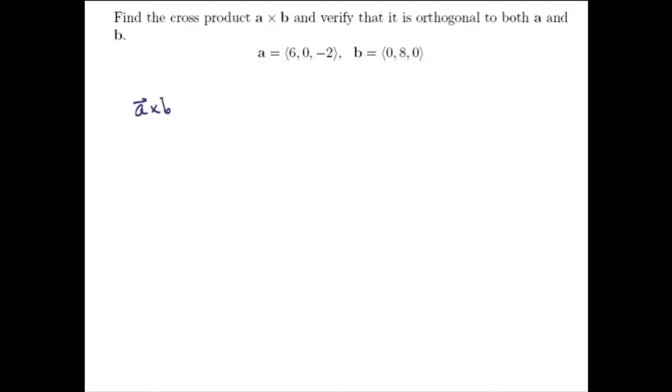The easiest way to find A cross B is to take the determinant of a 3 by 3 matrix, where the first row consists of the standard basis vectors I, J, and K. The second row consists of our first vector, in this case A, and the third row consists of the components of our second vector, in this case B, 0, 8, and 0.